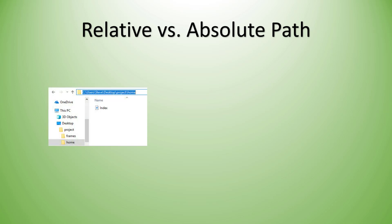We have our file in our file system. Let's say we had an index file located in the home folder inside of a project folder on our desktop. This path that we see here is the absolute path — this is absolutely where we can find the file on our hard drive.